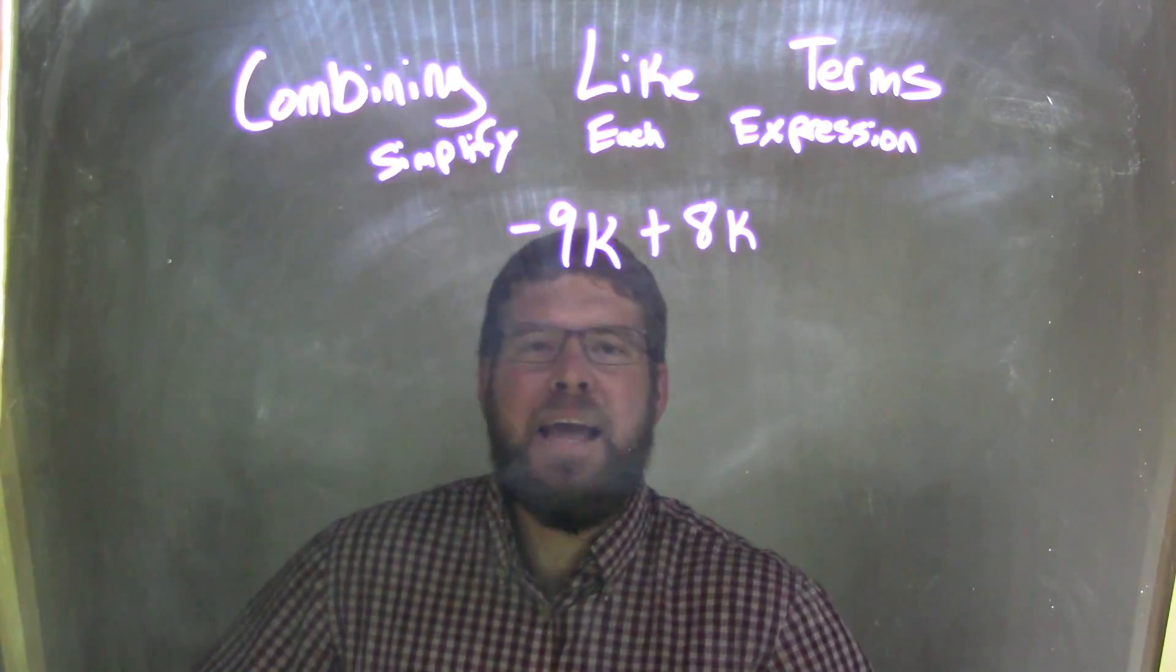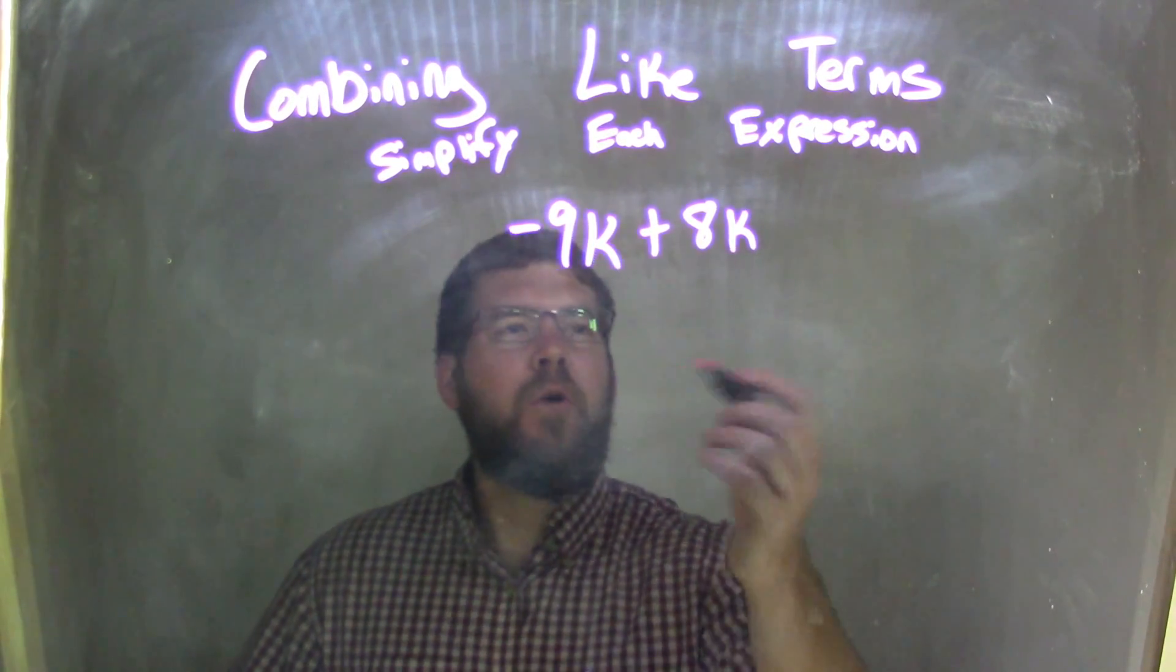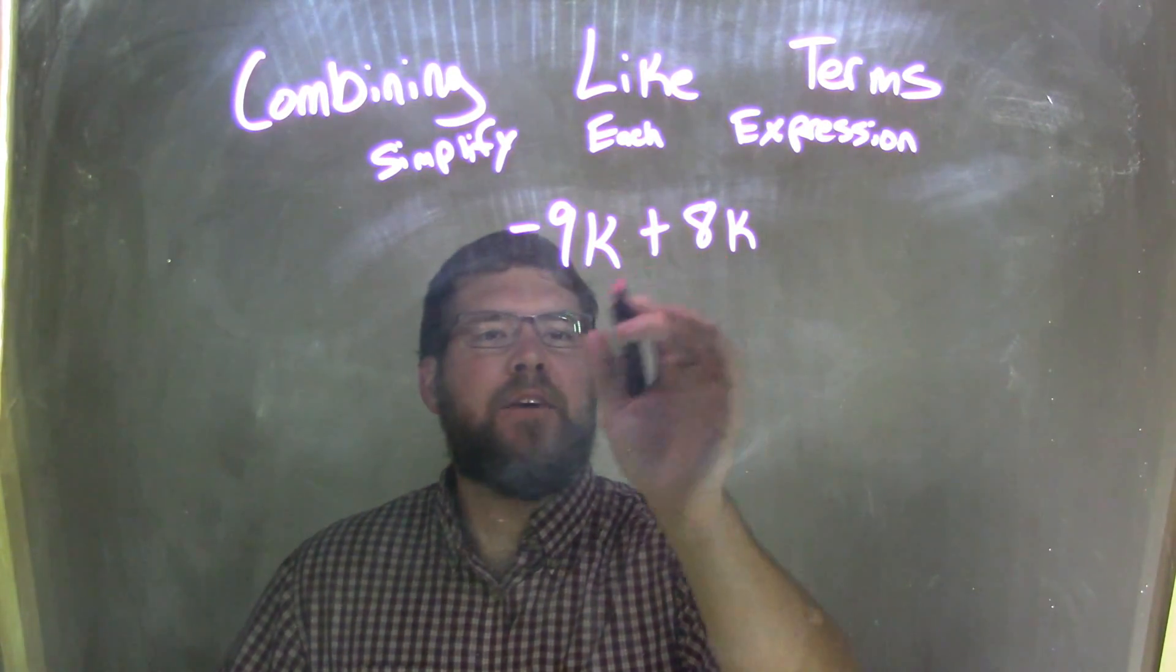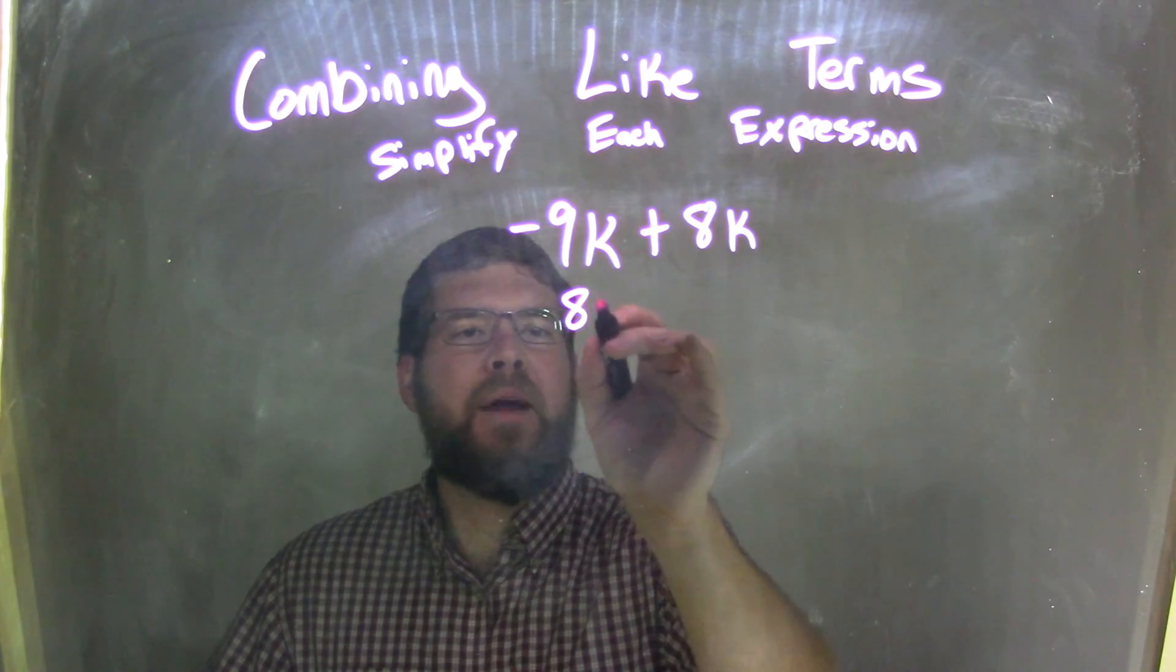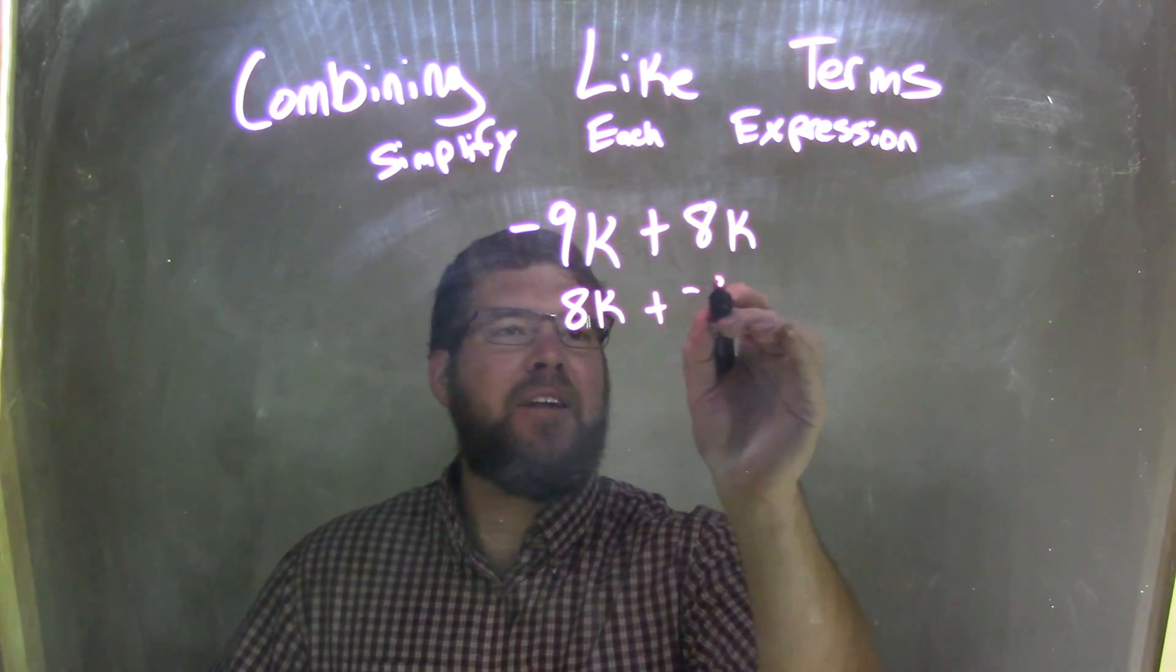But let's see if we can get there. So let's go rearrange this. Using the commutative property, I'm writing it as 8k plus a negative 9k.